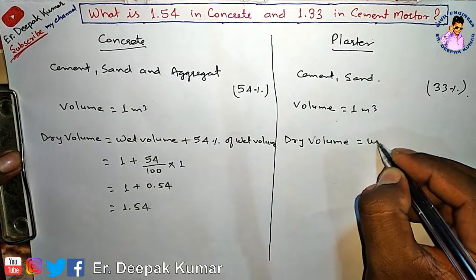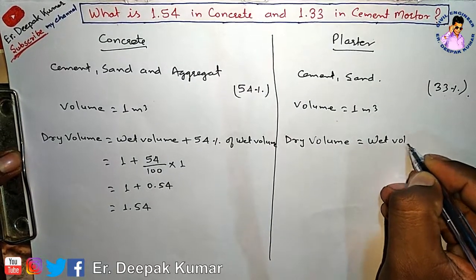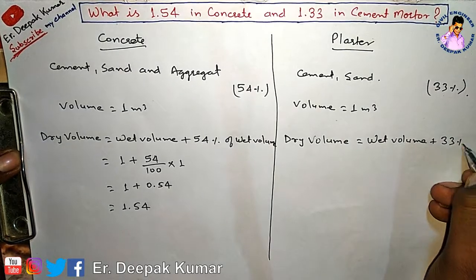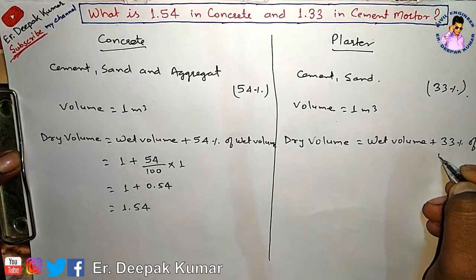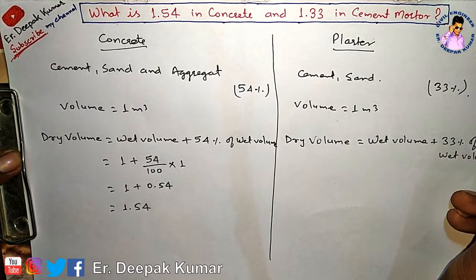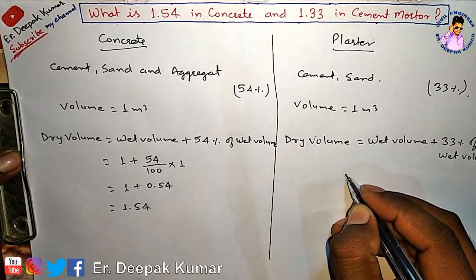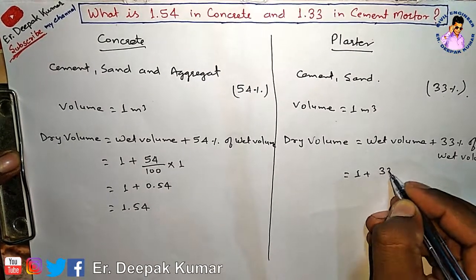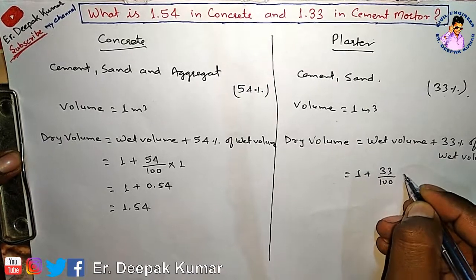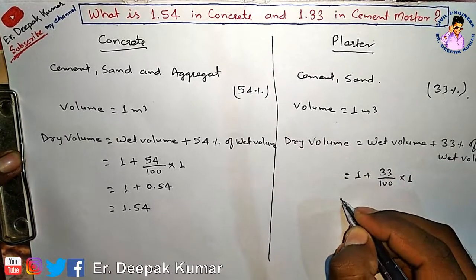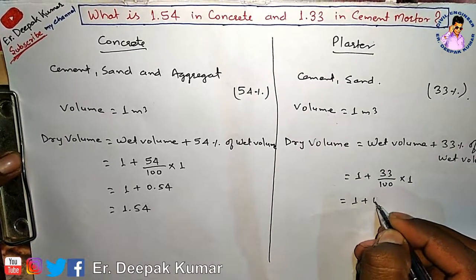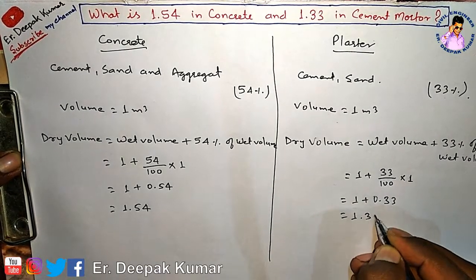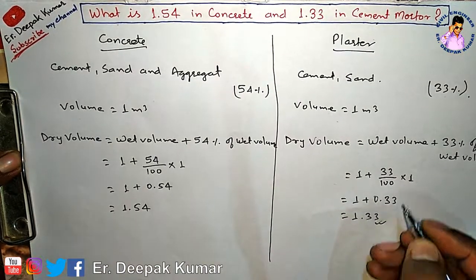In the same way for plaster: dry volume = wet volume + 33 percent of wet volume. That gives 1 + 0.33 = 1.33. So the dry volume factor for cement mortar is 1.33.